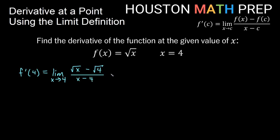Let's simplify √4 to get: limit as x approaches 4 of (√x minus 2) over (x minus 4). Now we need to evaluate this limit. If we try to just plug in 4, we get √4 minus 2 equals 0 on top, and 4 minus 4 equals 0 on the bottom — a 0 over 0 indeterminate form.